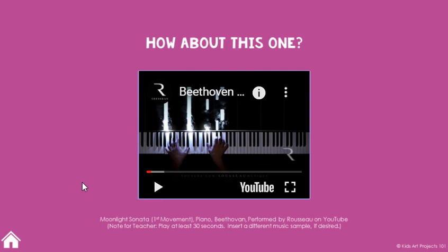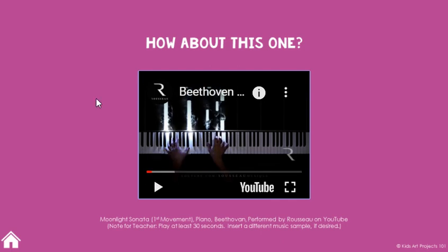You want to let kids listen to two different sound samples. If you wanted to swap in different video links, you are more than able to do that. You would click on the box and you can literally delete it, then within Google Slides go to Insert, then Video, and paste in a link to any YouTube music that you might prefer.